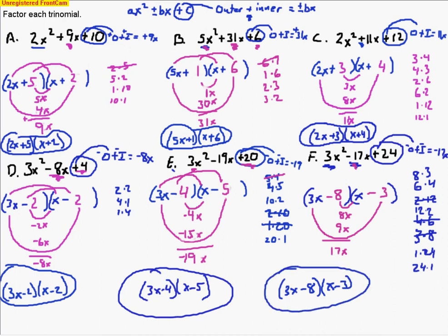Those are the problems you'll see on tonight's homework. The key is to look at that last term's sign: when it's positive, the outer and inner terms add together to make a positive result. If the last term is positive but the middle term is negative, the outer and inner terms add to make a negative. Good luck on tonight's homework.